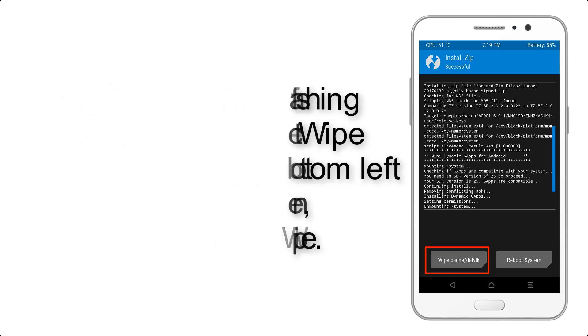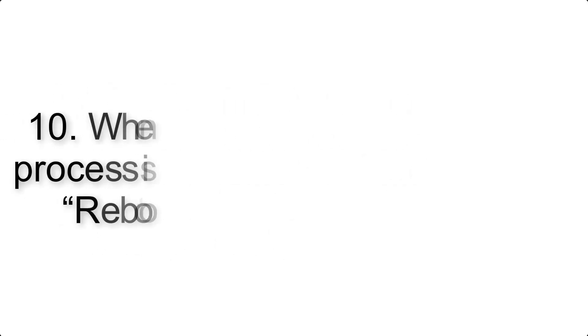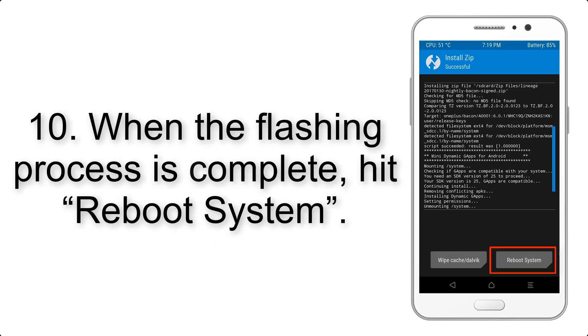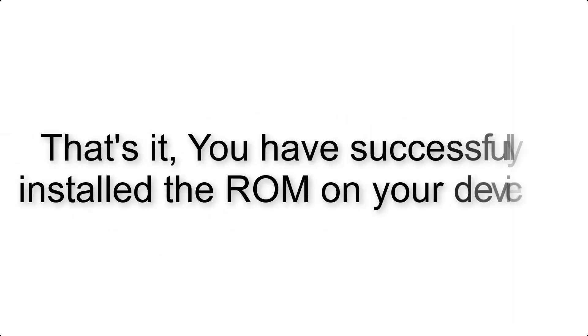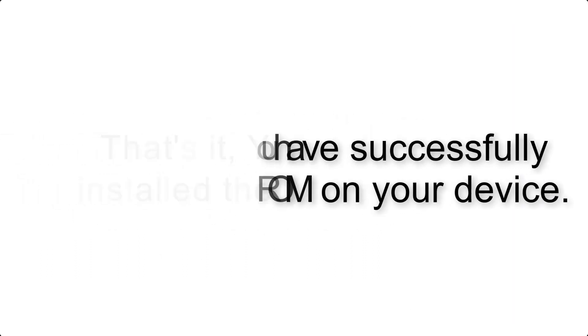Step 9: after GApps flashing completes, select Wipe Cache and Dalvik from the bottom left side of the screen and swipe to wipe. Step 10: when the flashing process is complete, hit Reboot System. That's it — you have successfully installed the ROM on your device.